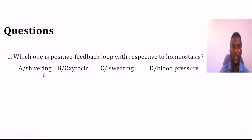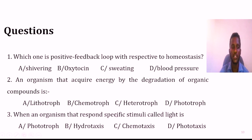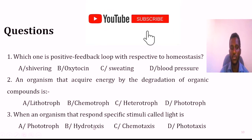Question number 1: Which one is a positive feedback loop with respect to homeostasis? A. Shivering. B. Oxytocin. C. Sweating. D. Blood pressure. Question number 2: An organism that acquires or requires energy by the degradation of an organic compound is: A. Lithotroph. B. Chemotroph. C. Heterotroph. D. Phototroph. Question number 3: When an organism responds to a specific stimulus called light, it is: A. Phototroph. B. Hydrotaxis. C. Chemotaxis. D. Phototaxis.